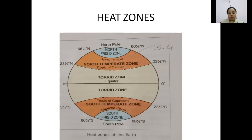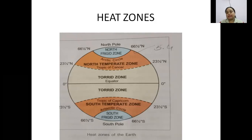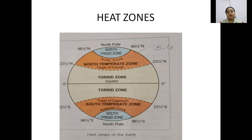To recap, there are three heat zones. The first is the torrid zone, between zero degrees and 23 and a half degrees north to 23 and a half degrees south — sun rays fall directly here. The north temperate zone is from 23 and a half degrees north to 66 and a half degrees north, with slanted rays. The south temperate zone is from 23 and a half degrees south to 66 and a half degrees south — moderate sun. The frigid zone runs from 66 and a half degrees to the poles and is the coldest zone with very little heat.